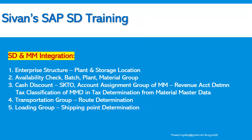SD and MM integration starts from enterprise structure. The plant and storage location, which are defined by the MM consultants, is where the SD and MM integration starts. For plant, we assign the shipping point — we assign multiple shipping points to the plant — and we assign the plant to the sales line. For intercompany sales perspectives, we also have to assign the plant to the sales organization and distribution channel combination. That is where it starts, during the enterprise structure definition and assignment.